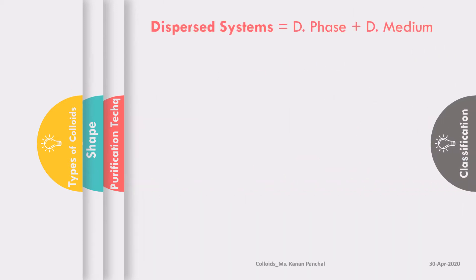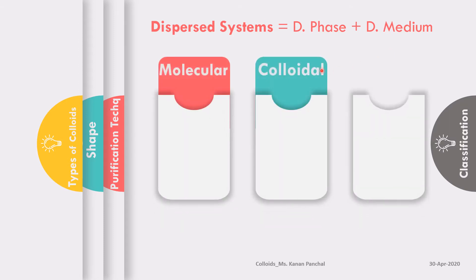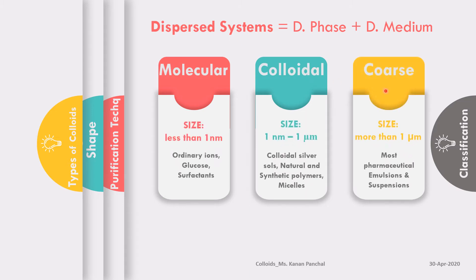A dispersed system is composed of two components: the dispersed phase and the medium in which it is dispersed. Based on their size, they are classified as molecular dispersed systems, colloidal, and coarse dispersed systems — this classification is only based on size. The size of molecular systems is less than one nanometer, colloidal ranges from one nanometer to one micrometer, and coarse dispersions are greater than one micrometer.